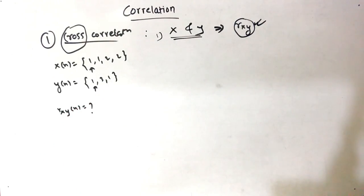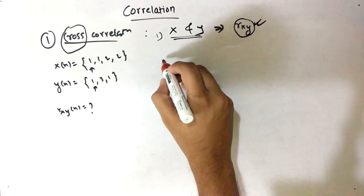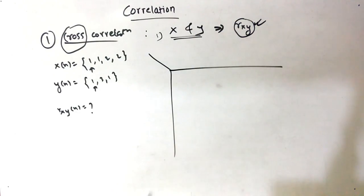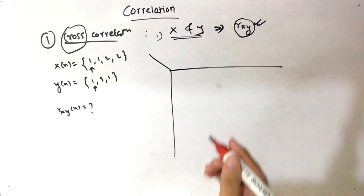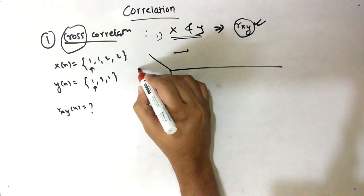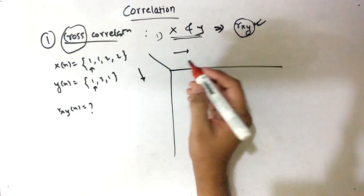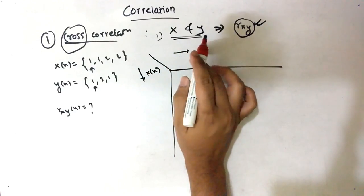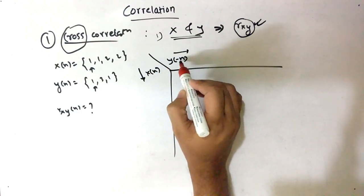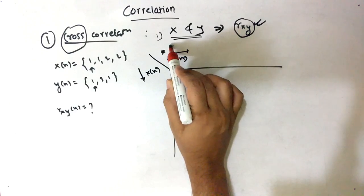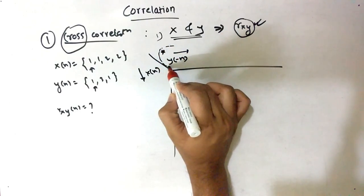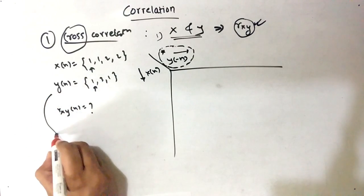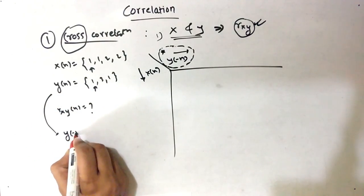So how do we find it? It is very simple. We have to form a grid — in one direction we denote something, and in the other direction something else. In this direction there is X(n), whereas in this direction there is Y(-n). This direction is important because it is Y(-n).